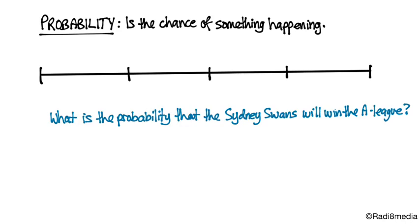So for example, if I asked you what's the probability that the Sydney Swans will win the A-League? Well, given that they are an AFL team and don't play in the A-League, we would have to say the chances of that happening are impossible.